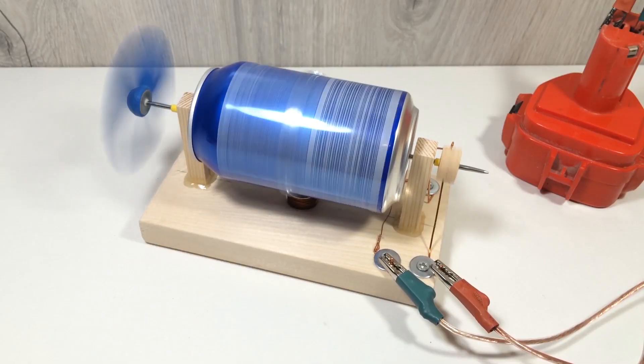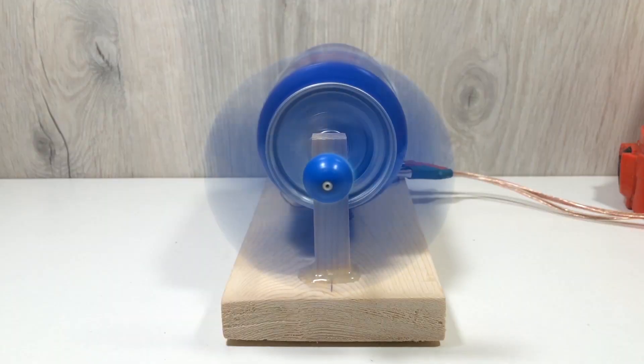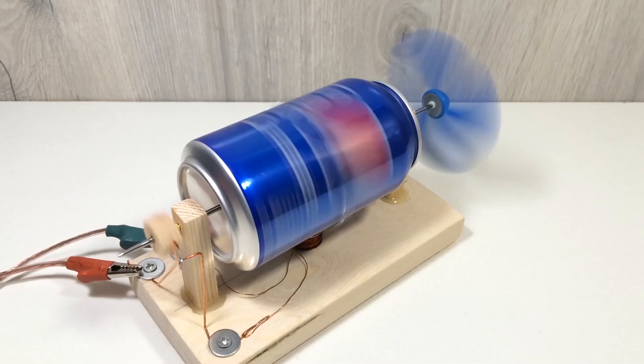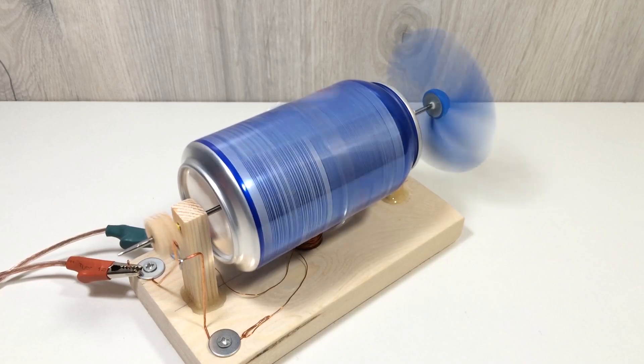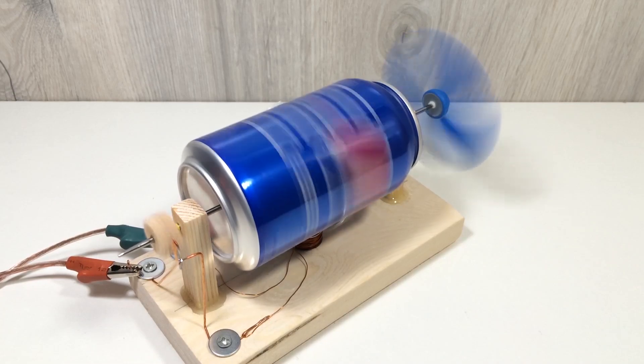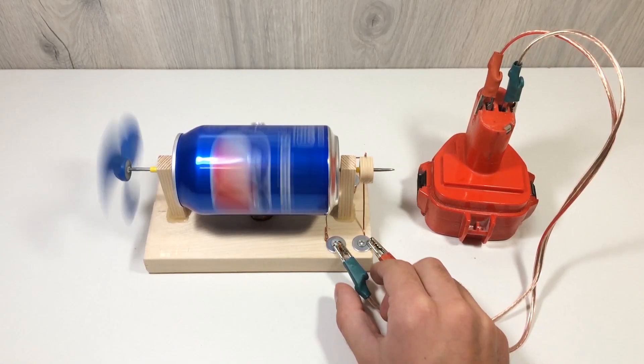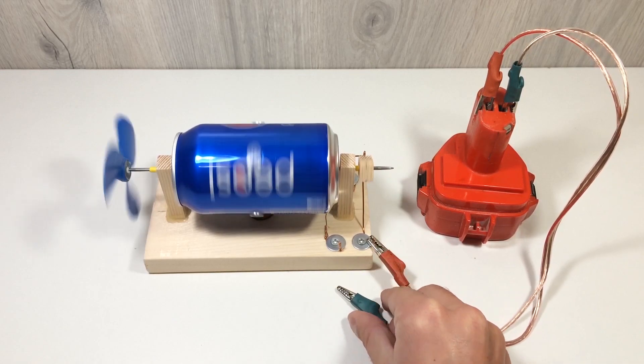And there you go, a working DIY electric motor with a Pepsi can as the rotor. If you enjoyed this project, don't forget to hit like, subscribe, and let me know in the comments if you want to see me build a more powerful version with multiple coils. Thanks for watching, and I'll see you in the next project.